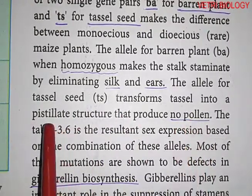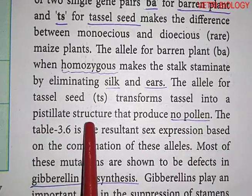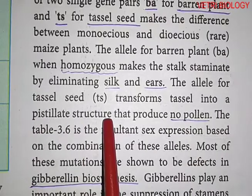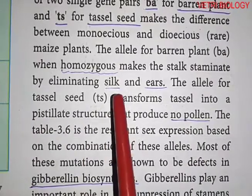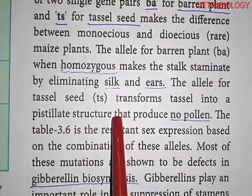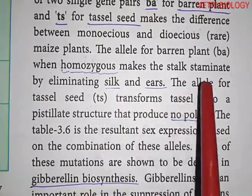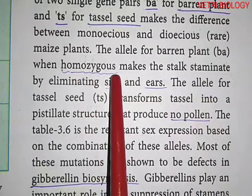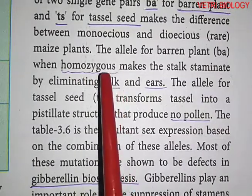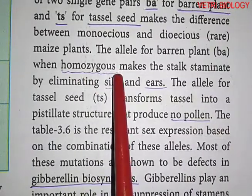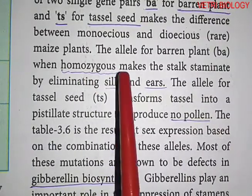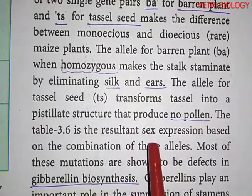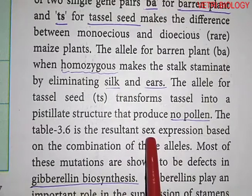This produces a pistillate structure. These two selective abortions occur in homozygous conditions. These alleles are responsible for sex expression in the plant.